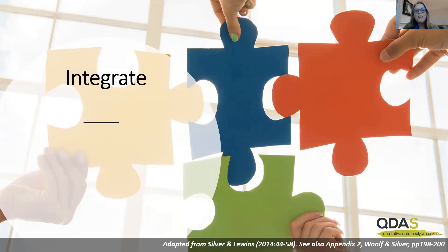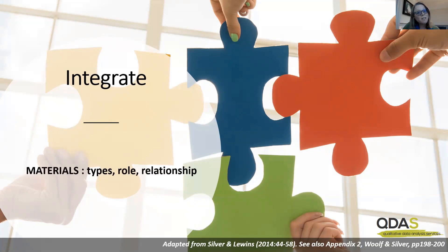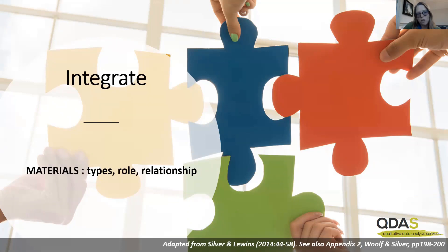So first of all, integrate, or bringing things together, combining parts into a whole. There are three aspects to think about. Firstly, the materials we're working with. I'm using the term materials rather than data here, because as well as the data — primary or secondary — there will often be all kinds of supplementary or background materials that we need to bring together. So we need to think about the types of materials, their role in our project, why we're working with them, how they're useful, and what their relationship is in our project as a whole.